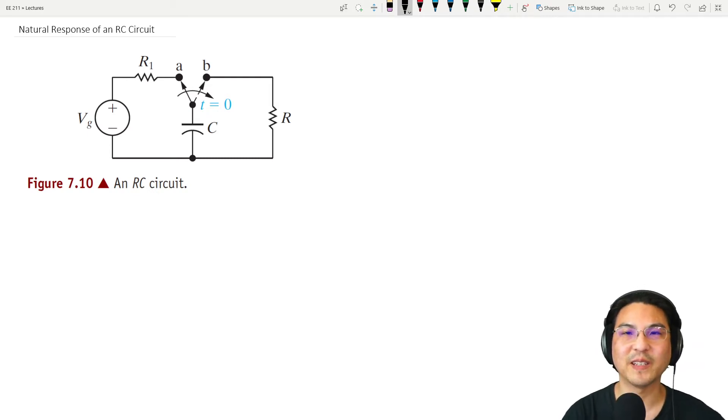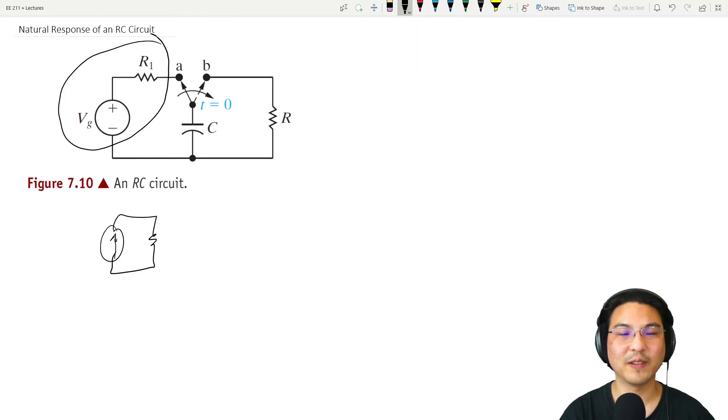So now that you've seen an RL circuit, let's talk about an RC circuit. In this case we have a switch here, so we can ignore this stuff, and then we have a source here. You can always do a source transformation and replace that with a Norton equivalent, whereas this can be a Thevenin equivalent of something more complicated.